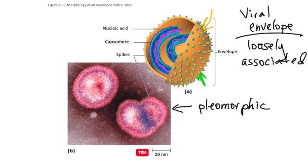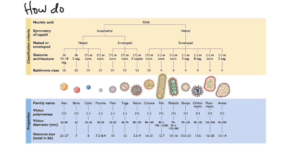In this case, because the viral envelope is loosely associated, these viruses actually look pleomorphic when we look at them under an electron microscope. So different shapes, different structures, different sizes of viruses. How do we classify viruses?